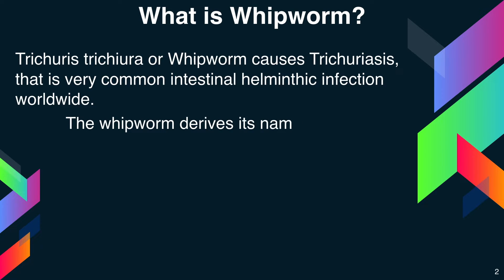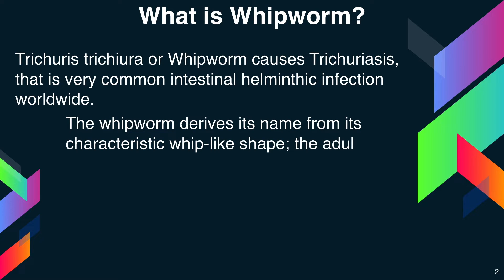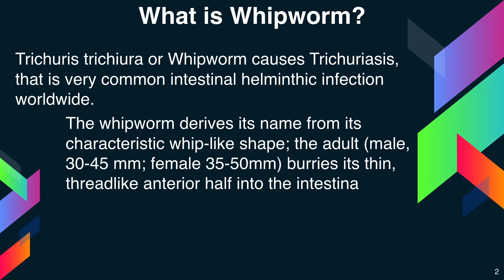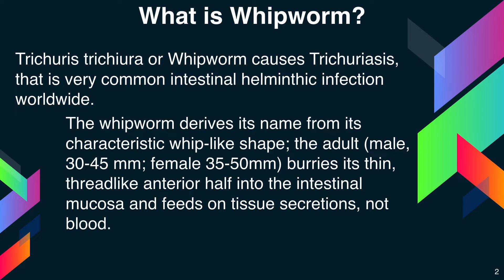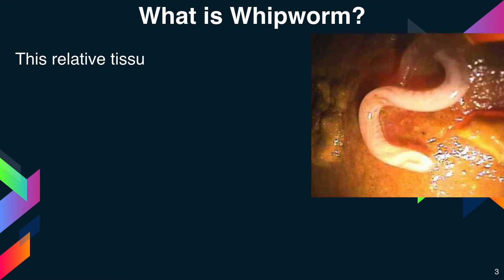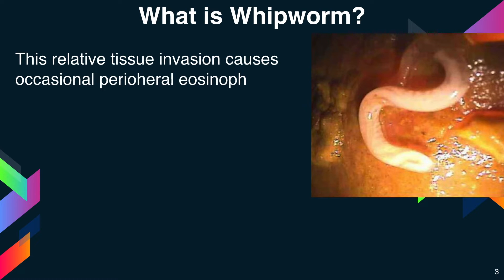The whipworm derives its name from its characteristic whip-like shape. The adult male size is between 30 to 40 mm and female size is between 35 to 50 mm. It buries its thin, thread-like anterior half into the intestinal mucosa and feeds on tissue secretions, not blood. This relative tissue invasion causes occasional peripheral eosinophilia.